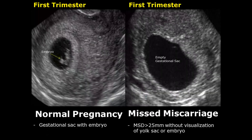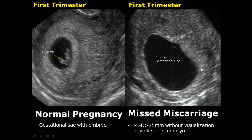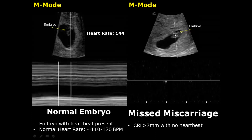A missed miscarriage occurs when there are no clinical symptoms such as vaginal bleeding, but it has some ultrasound features. The first is an empty gestational sac when there is no yolk sac or embryo seen even when the MSD is greater than 25 millimeters. The second feature is a CRL greater than 7 millimeters with no heartbeat. Unfortunately in this image there is no heartbeat detected in the embryo, but we must wait and watch as it can recover on further scans.